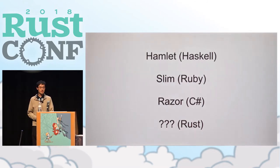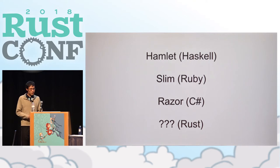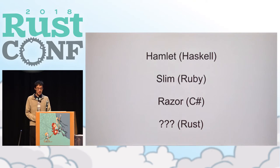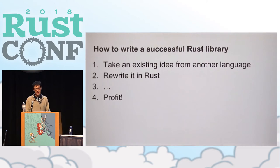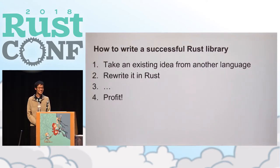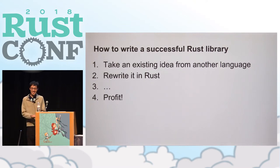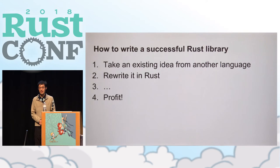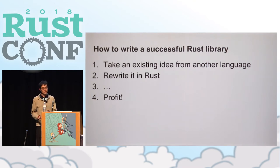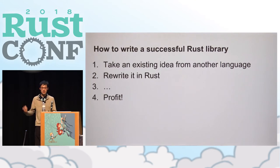This isn't the first place I saw this idea — I had already known about this general concept from other languages like Hamlet in Haskell, Slim in Ruby, and Razor in C#. In that sense, Maud isn't really original except for the fact that it's written in Rust. And I don't think that's a bad thing at all. In fact, it's a good thing because you already know the idea has been proven elsewhere. And because Rust is still young, there is still a lot of low-hanging fruit around.